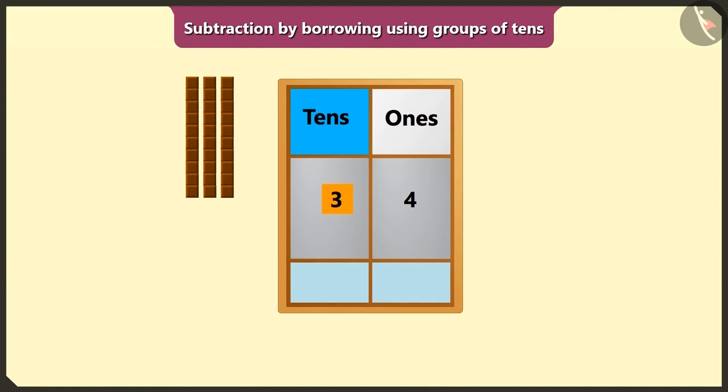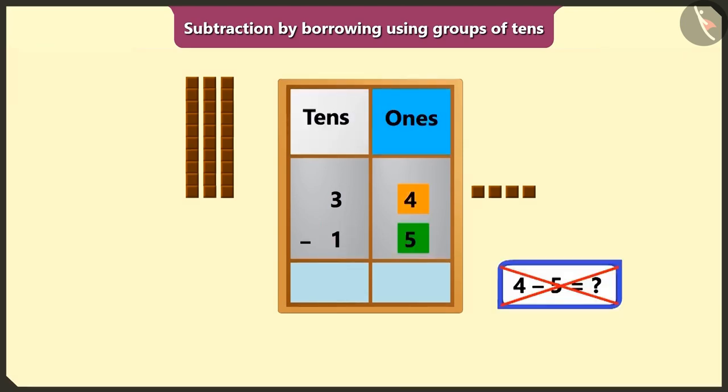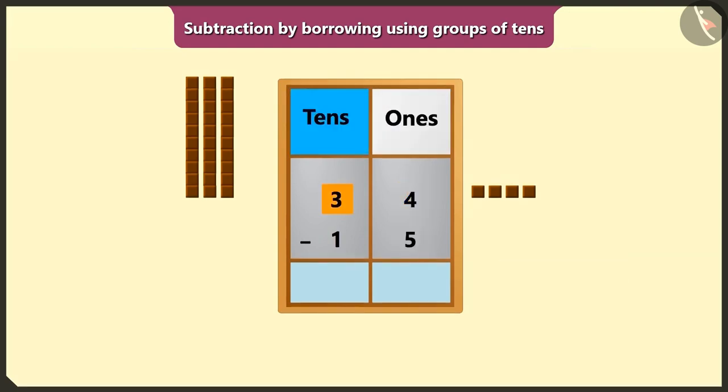34 means 3 tens and 4 ones. 15 means 1 tens and 5 ones. We cannot subtract 5 from 4 in the box of ones. So we will borrow 1 tens from 3 tens from the box of tens.